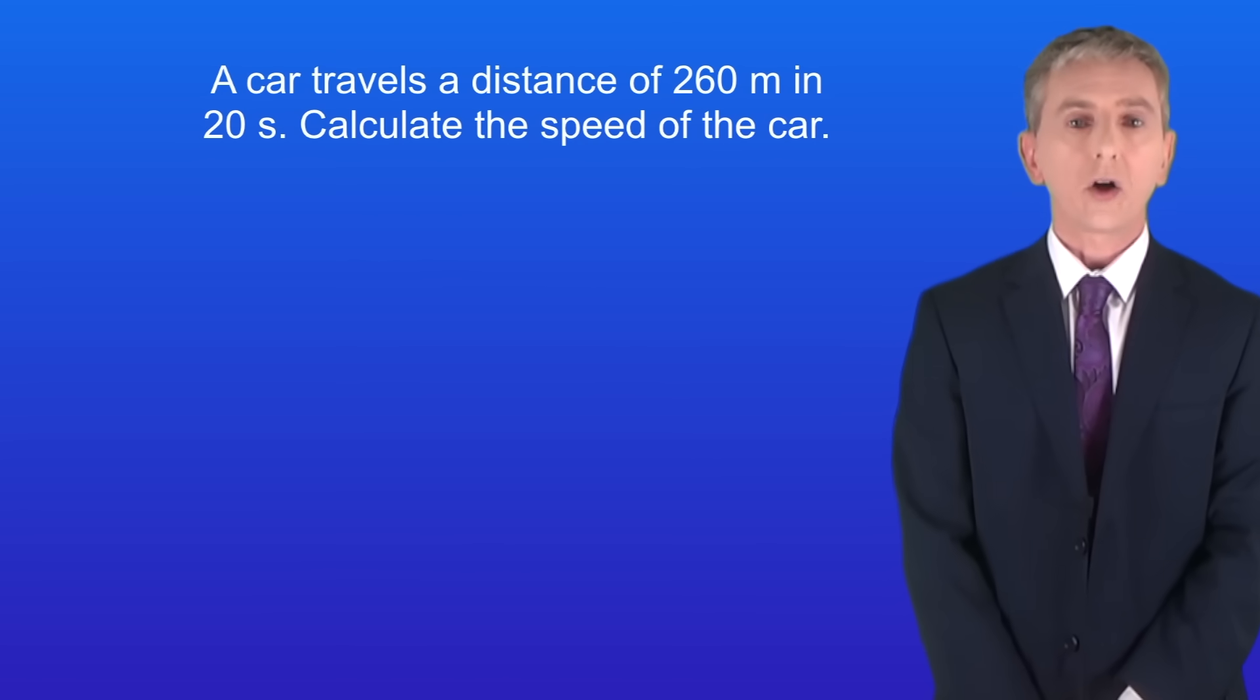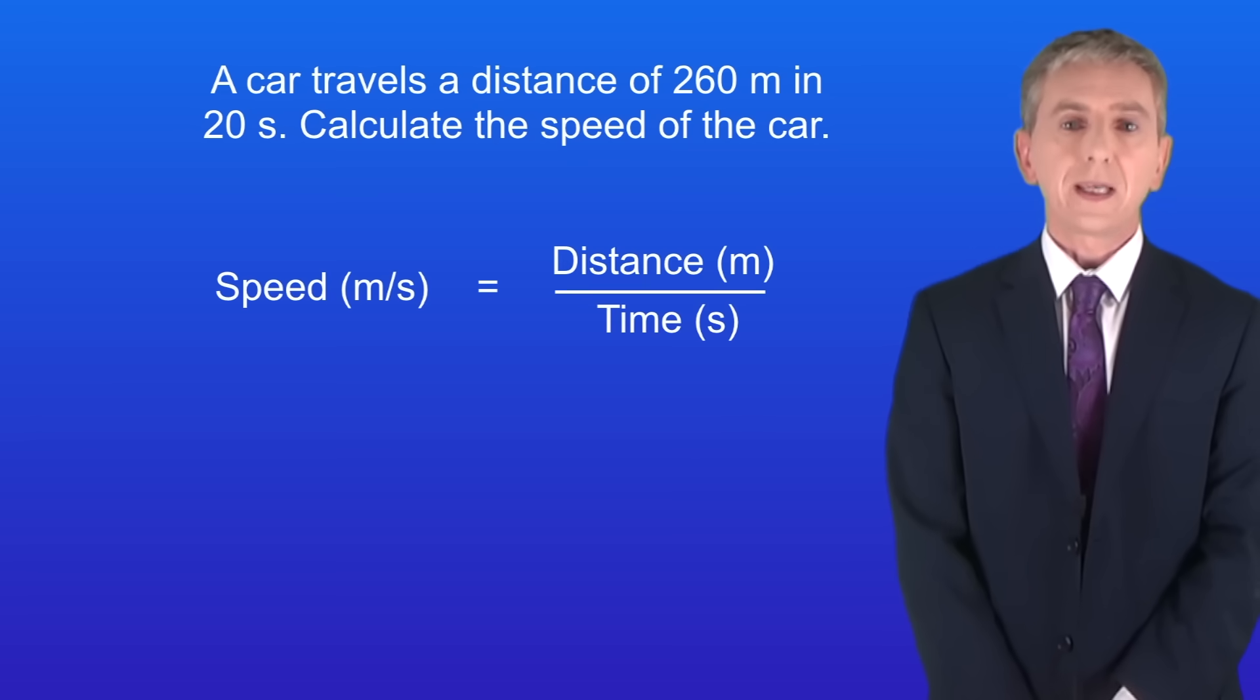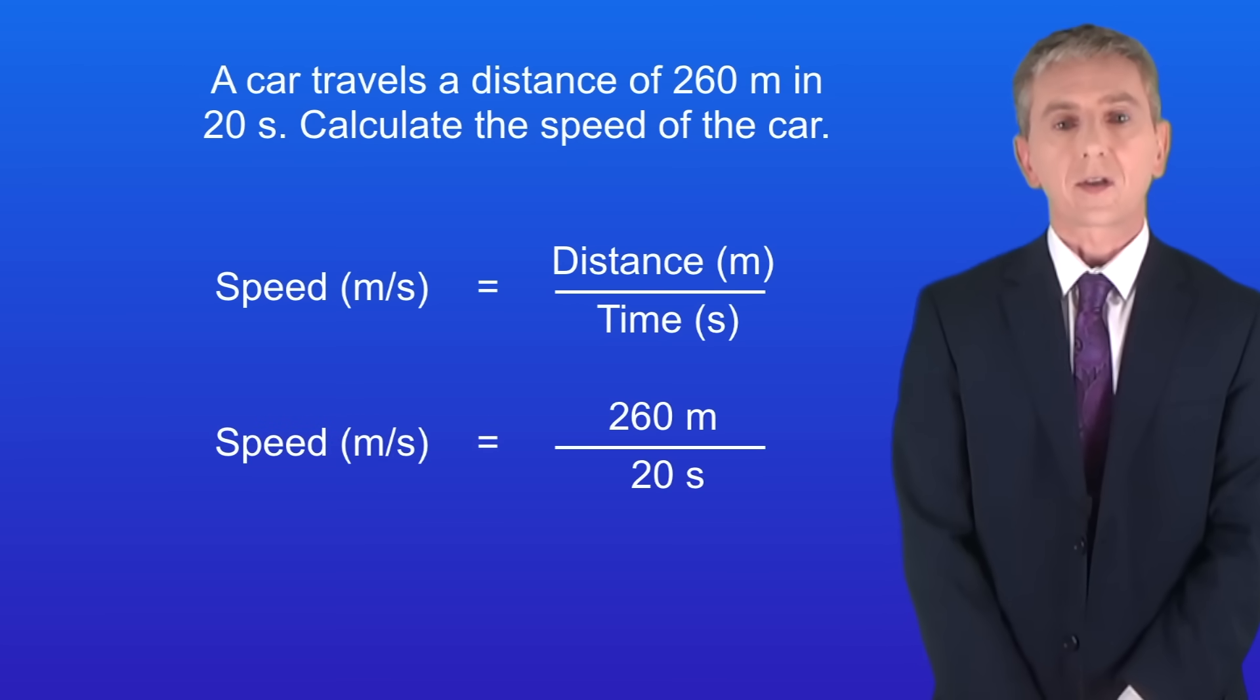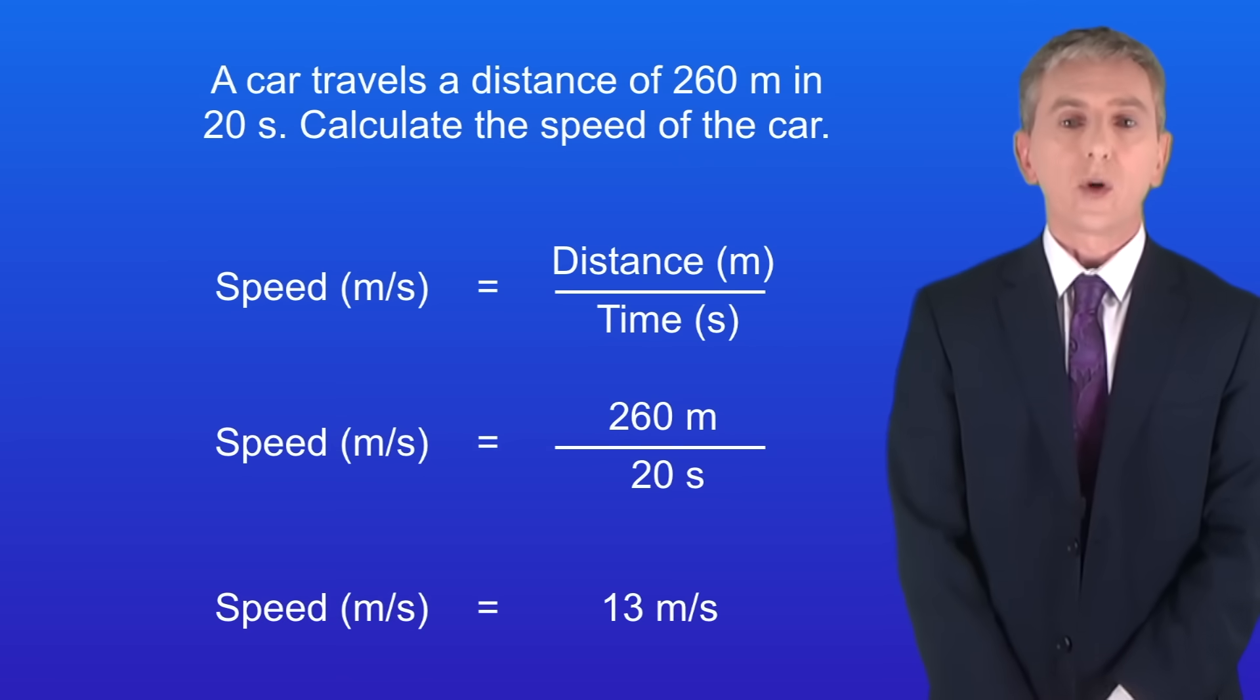Here's a typical question. A car travels a distance of 260 meters in 20 seconds. Calculate the speed of the car. So pause the video now and try this yourself. Okay, so the speed is the distance traveled divided by the time taken. In this case the distance is 260 meters and the time taken is 20 seconds. Putting these into the equation gives us a speed of 13 meters per second.